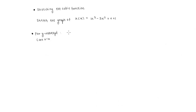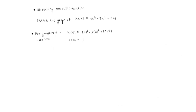So doing that, we'll have k(0) equal to 0 cubed minus 3 times 0 squared plus 0 plus 1. You can see that all these three terms will go to 0, so k(0) is equal to 1. Written in coordinate form, our y-intercept is going to be at (0, 1).